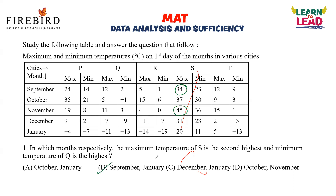If you want to check the remaining part: the second part of the question is the minimum temperature of Q is highest. The minimum temperature of Q highest lies in the month of January. January is the minimum temperature of Q. Now let us go to the second question.